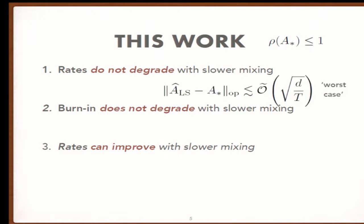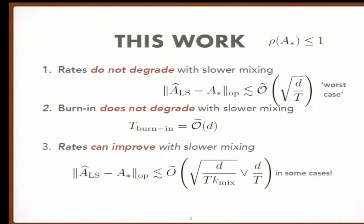Let's make these quantitative. First, in the worst case you get O-tilde of square root D over T estimation. For the operator norm, this is the right quantity. Second, we get O-tilde of D burn-in time. These O-tildes hide logarithmic factors in dimension, condition number, and Jordan blocks. Finally, for certain classes of systems, rates can speed up linearly in the mixing time for squared error, or reach a fast rate regime even better than this.